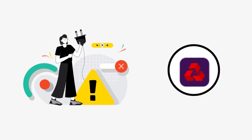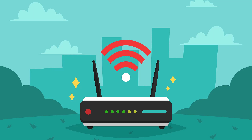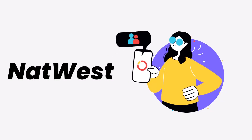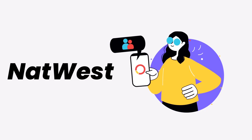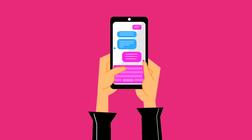First of all, you need to make sure you have a strong and stable internet connection. To do so, do a quick test to check if your internet is working — simply open up an app that runs on internet other than the NatWest mobile app and check if it's working. You can also try switching from Wi-Fi to mobile data and vice versa.